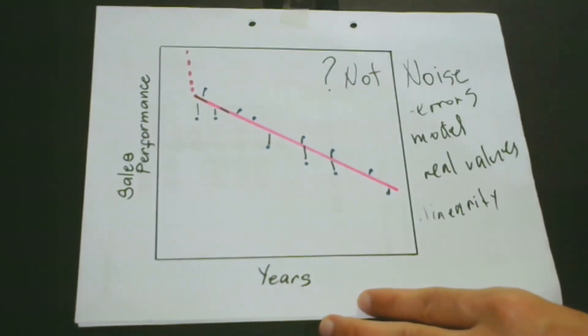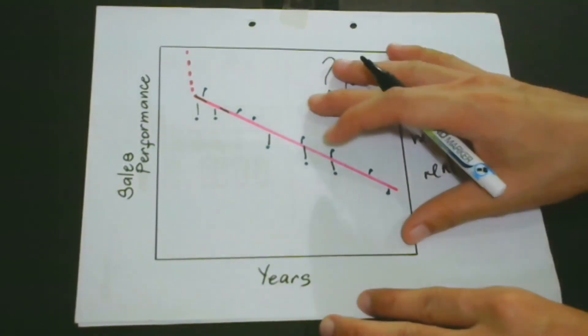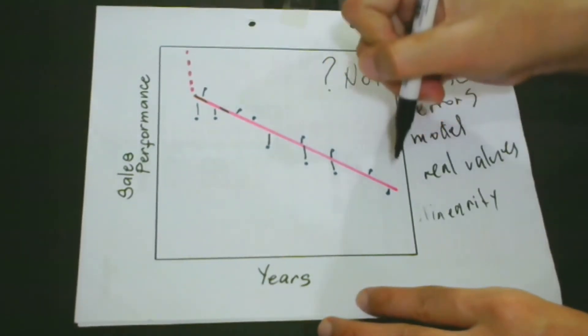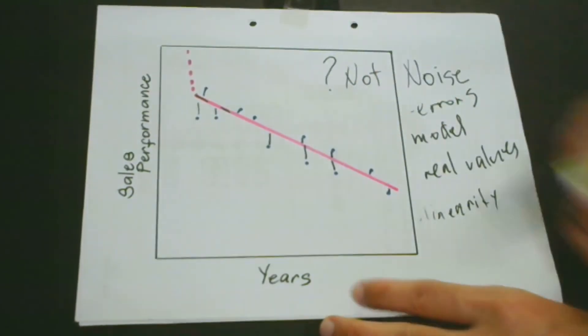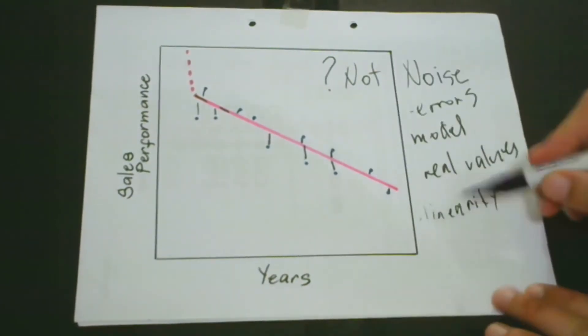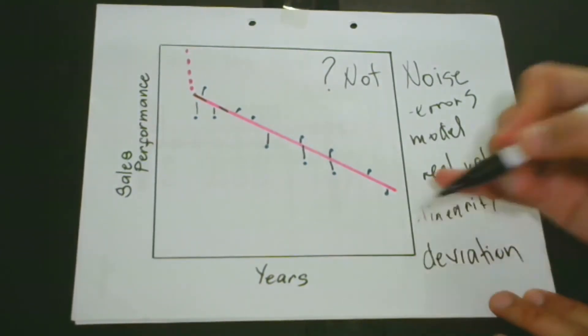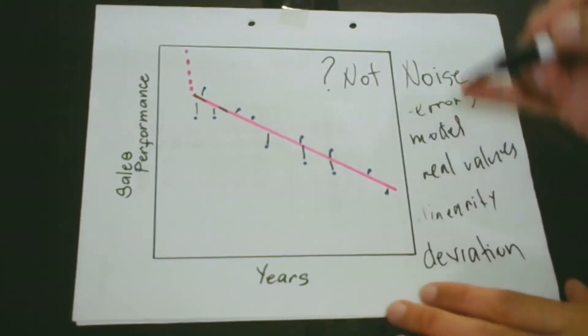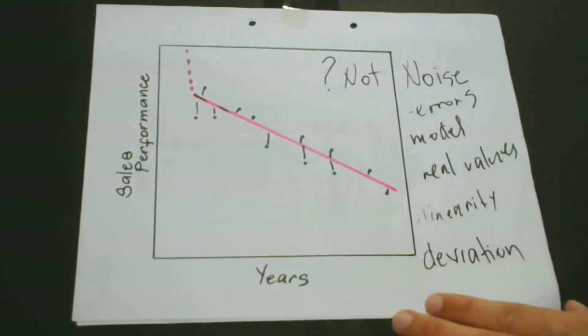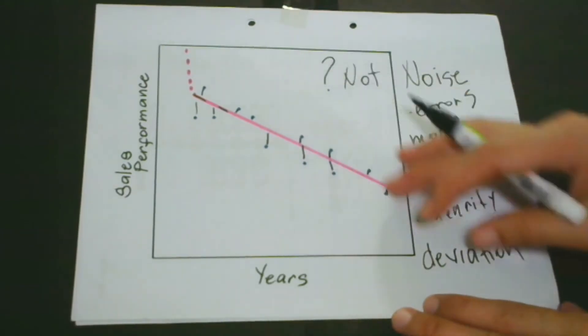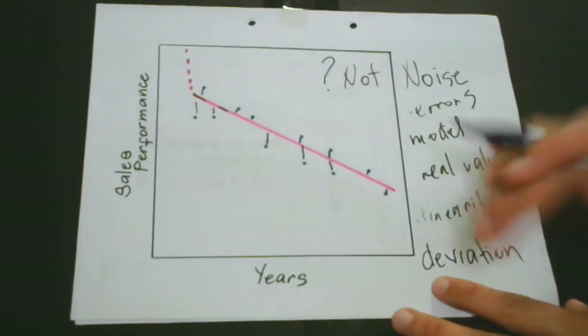Now, take note of this. Listen very carefully. This model disregards the deviation. Let me write here because this is very important. Again, this model disregards the deviation between the model and the observed data or the real values.